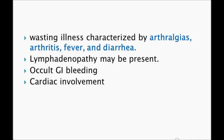Clinically, patients present with a wasting illness characterized by arthralgias — swelling of the joints — which is the most common finding. Fever and diarrhea can also be seen, along with lymphadenopathy, occult GI bleeding, and cardiac involvement.